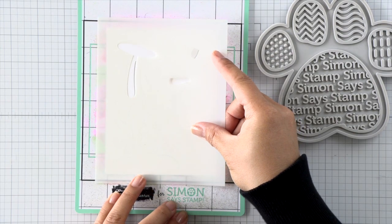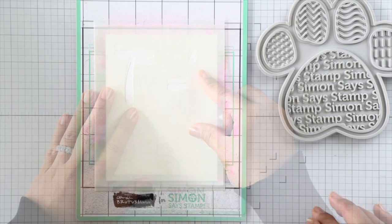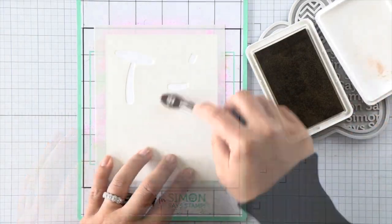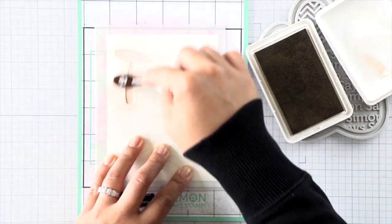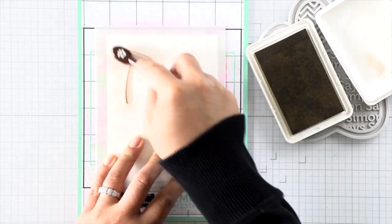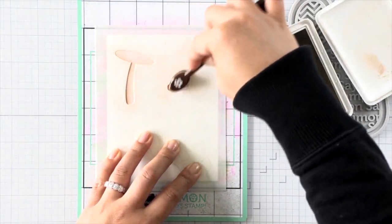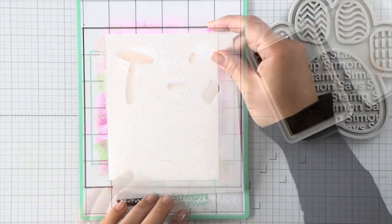I'm using my stamp and stencil mat to hold down all those itty-bitty pieces. The adhesive on the stamp and stencil mat is going to hold down all of my die cut parts so that my stencil and die cut pieces don't move while I'm stenciling and adding all of these colors. This first layer is a simple one. It's just the mushroom bases. So I'm using a light brown to add some color and dimension by adding shading on one side of those mushroom stems.